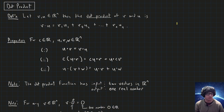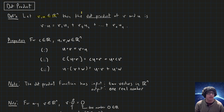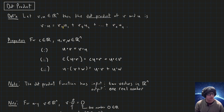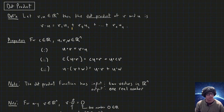Let's talk about the dot product on two vectors. If we let v and u be vectors in Rn, then the dot product v dot u is defined as follows: you take the product of the first components of v and u, plus the product of the second components, and so on up to the products of the nth components, and you sum them all up. That's the dot product — you've probably seen this in many other courses.